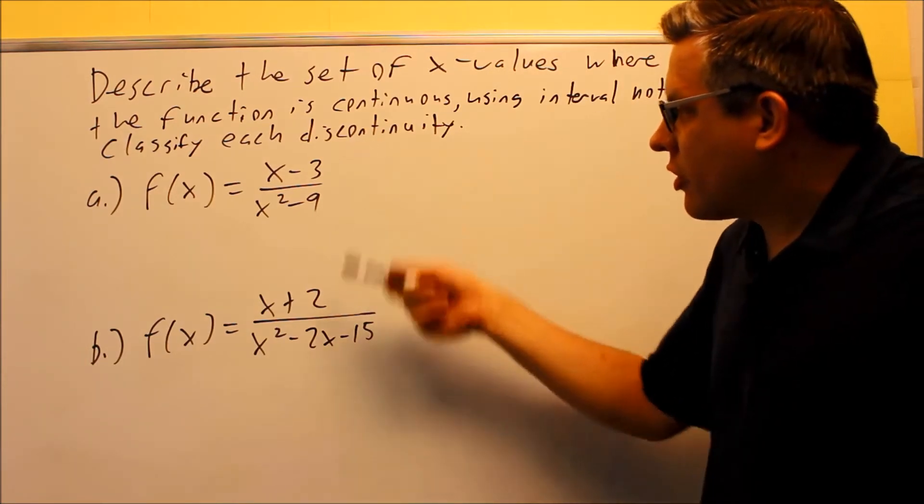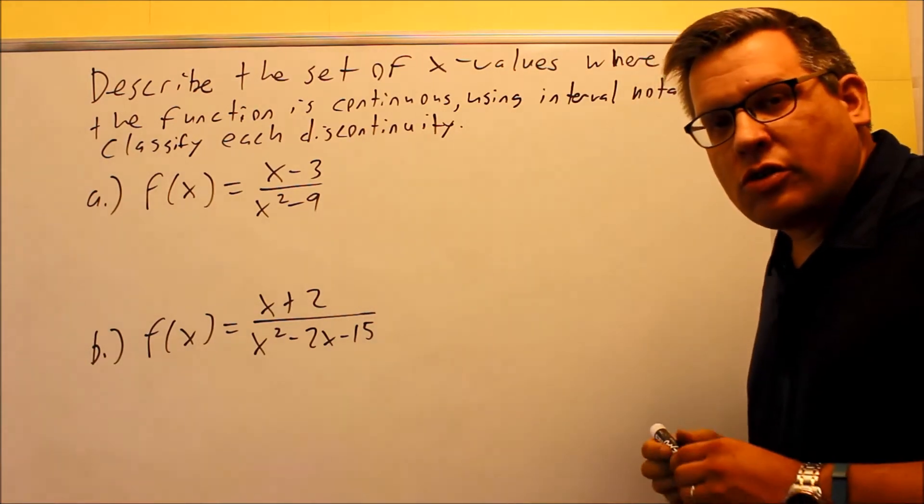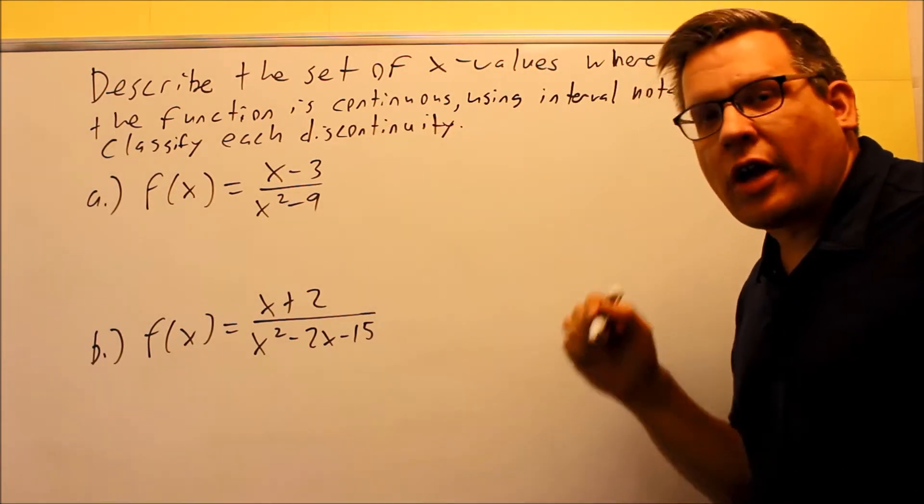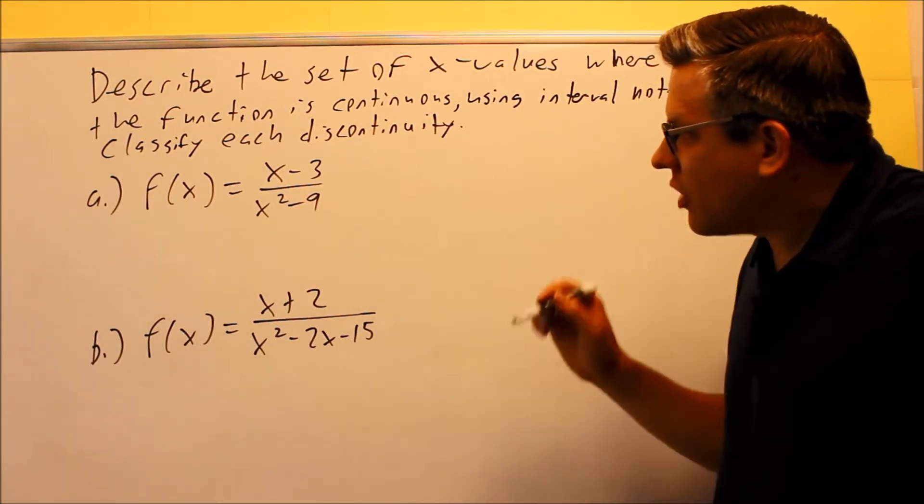Now for these kind of problems that look like you can do factoring, that's the first thing you want to do. You want to factor it because you'll be able to see whether you have a hole or if you have a vertical asymptote, what's happening there. So in this case, for this one,